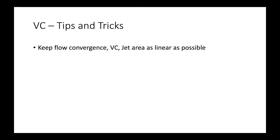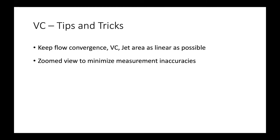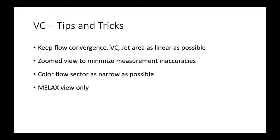Some tips and tricks for vena contracta: keep the flow convergence and jet area as linear as possible. Have a zoomed view to minimize measurement inaccuracies. The size and position of the color box should be adjusted to focus on the region of leaflet coaptation, not necessarily the entire regurgitation jet within the LA. Keep your color flow sector as narrow as possible to maximize lateral and temporal resolution, and have your scale setting at about 40 to 60 centimeters per second. The mid-esophageal long axis view for the vena contracta avoids cutting the coaptation line obliquely and potentially overestimating the width of the jet. Classical MR is generally holosystolic, but you can get overestimation when it's not — as with mitral valve prolapse, where you get a late systolic jet — so it's important to time your vena contracta measurements with your jet.